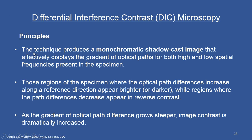In contrast to phase contrast microscopy, DIC is an optical system viewing the gradients in the optical path length, converting them into contrast in the image. The technique produces a monochromatic shadow cast image that effectively displays the gradient of optical paths for both high and low spatial frequencies present in the specimen. Regions where optical path differences increase appear brighter or darker, while regions where path differences decrease appear in reverse contrast. As the gradient grows steeper, image contrast is dramatically increased.